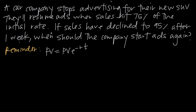In other words, based on the trend after just one week — that we've gone down to 95% — when should they expect to hit 75% and therefore start running the ads again? This problem is similar to continuously compounded interest or population growth, because we're always using this formula: future value equals present value times e, the exponential function, raised to the rt.